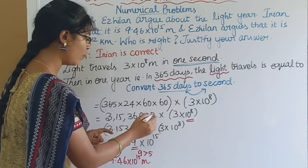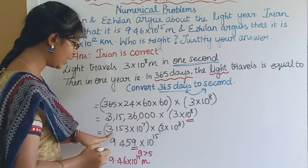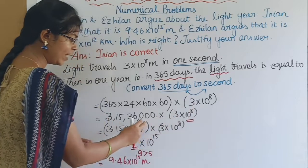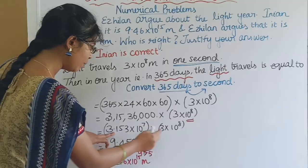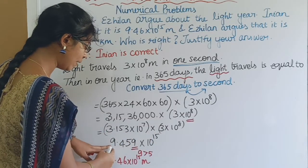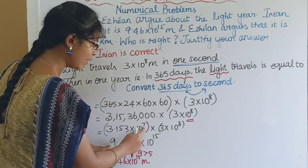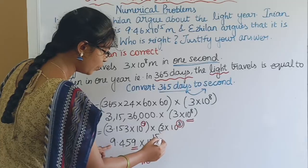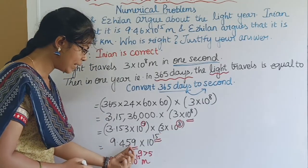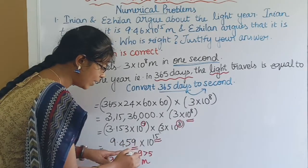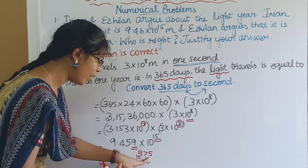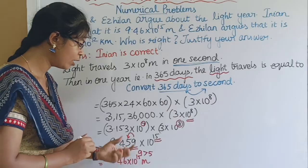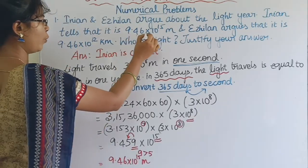Multiplying the numerical parts: 3.153 × 3 gives approximately 9.459. For the powers of ten, 10⁷ × 10⁸ = 10¹⁵, since 7 plus 8 is 15. So the result is 9.459 × 10¹⁵ meters. Rounding 9.459 to 9.46 (since the digit after is greater than 5), we get 9.46 × 10¹⁵ meters. So the light year is 9.46 × 10¹⁵ meters, confirming the first value is correct.